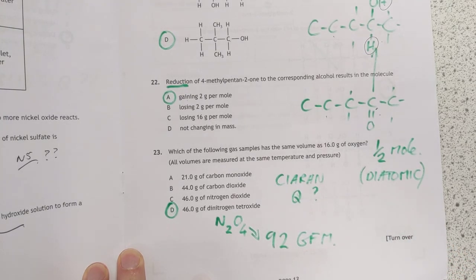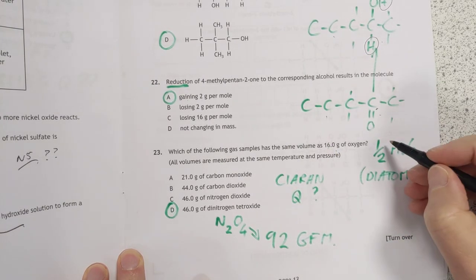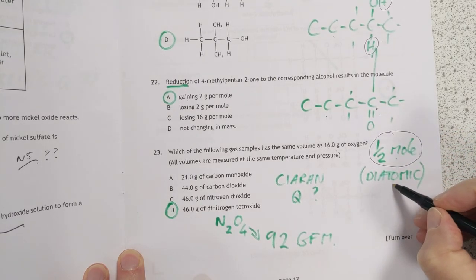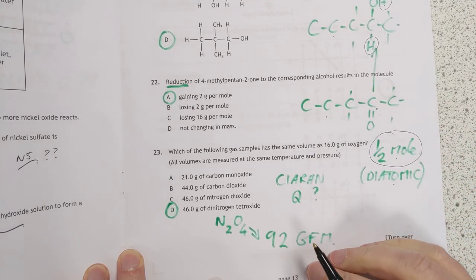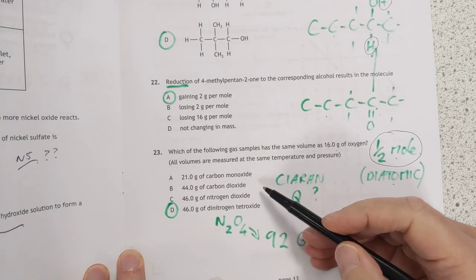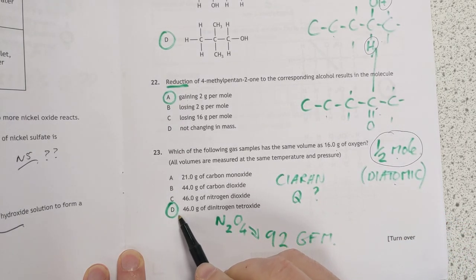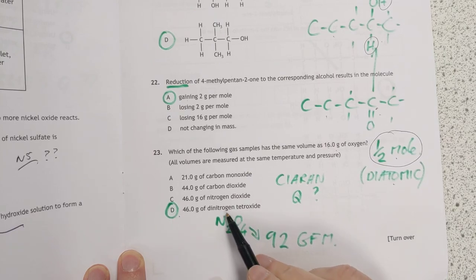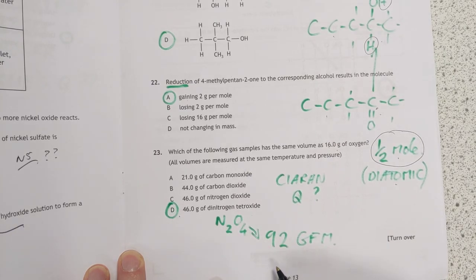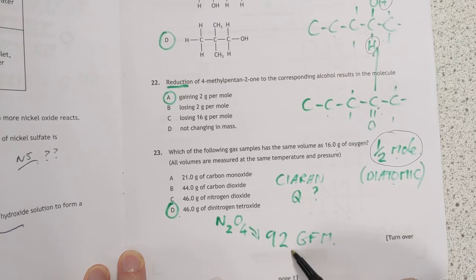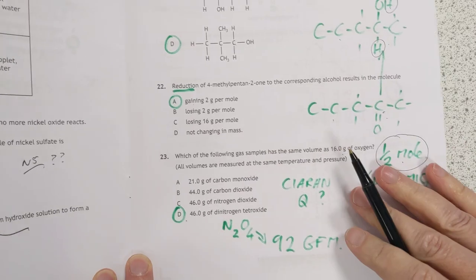16 grams of oxygen is half a mole. Don't forget, oxygen's diatomic. Which one of these matches up to a half a mole, basically? And the answer is, in the old tradition of the SQA, at the end, it's the last one. N2O4 is dinitrogen tetroxide. There's a lot going on here to get you one mark. No wonder this is Ciaran's question. So 92 for the GFM, so 46 is half a mole.